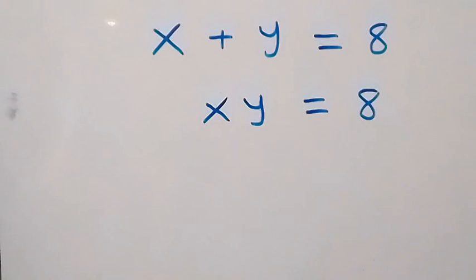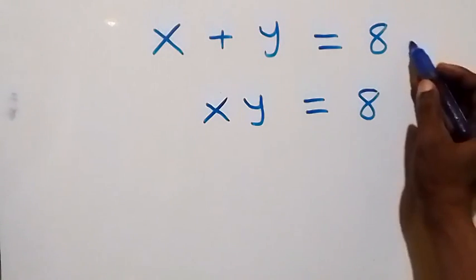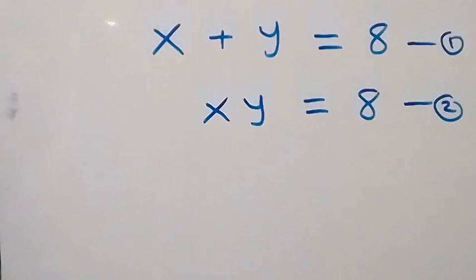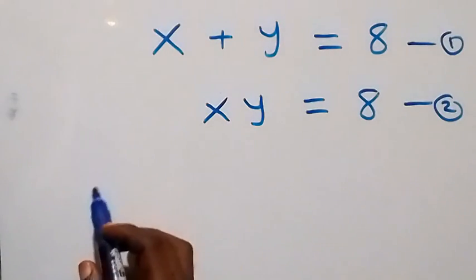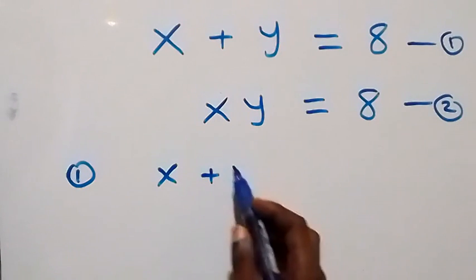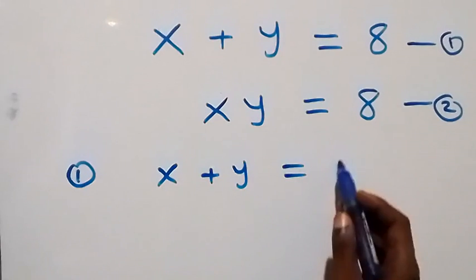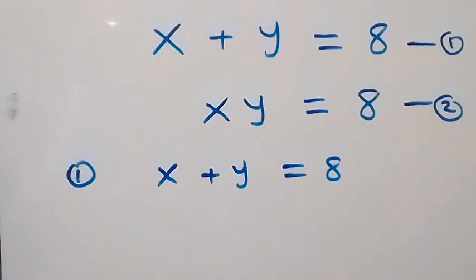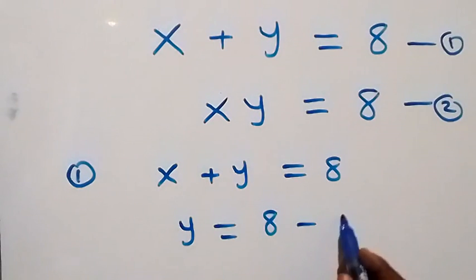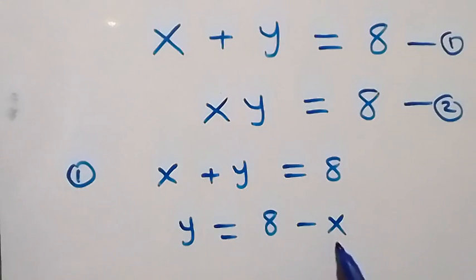Hello, you are welcome. How to solve for x and y in these systems of equations. Let's label this as equation one and here as equation two. From equation one we have x plus y equals 8, and from here let's make y the subject — we have y equals 8 minus x.